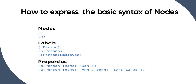A node can have more than one label. For example, I am a Person and I am also an Employee of a company, so I am eligible for two labels: Person and Employee. Properties are associated with the node and are always written in curly braces as key-value pairs. For example, 'p' is the variable, 'Person' is the label, and the properties are defined inside the curly braces. You can add as many properties as required.